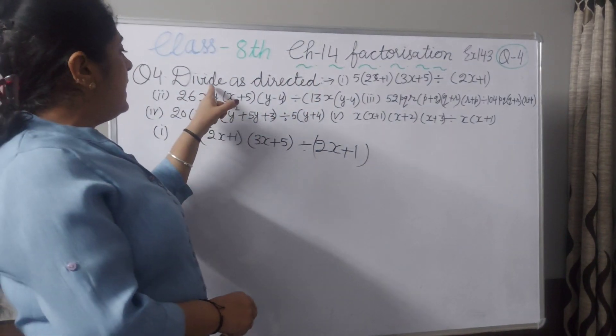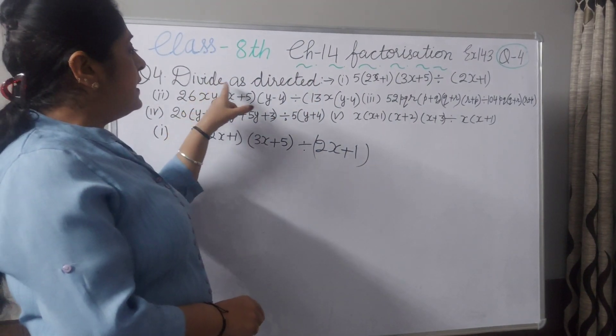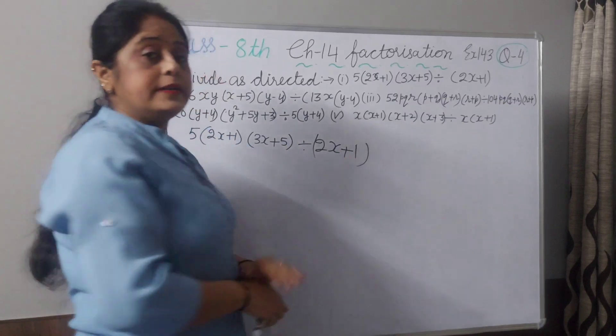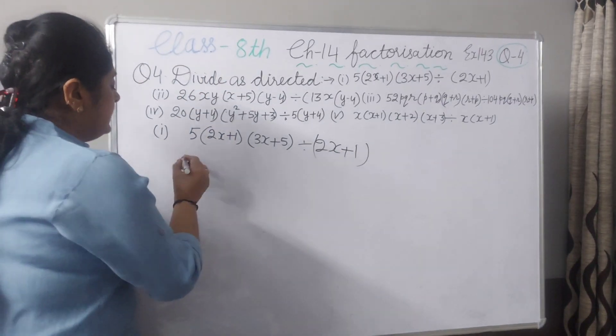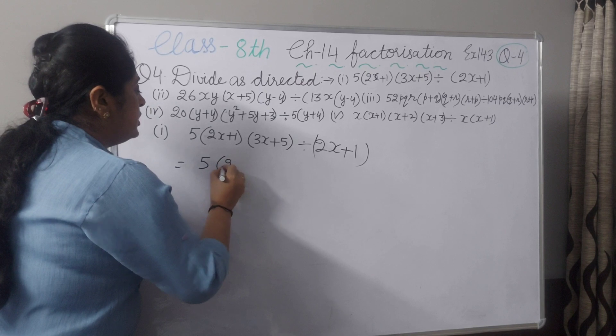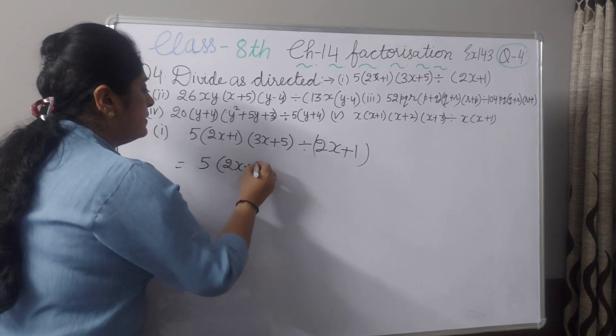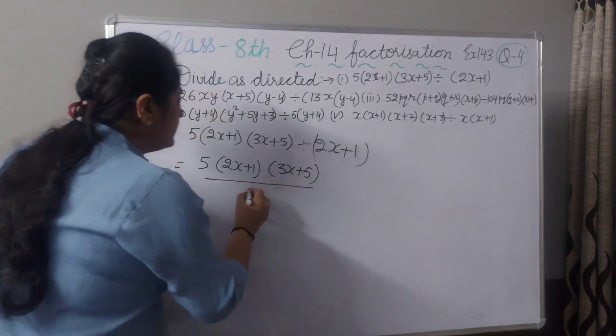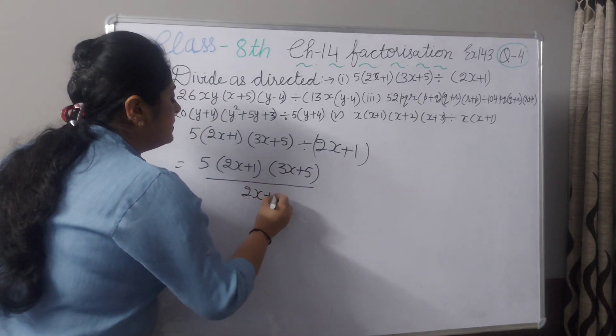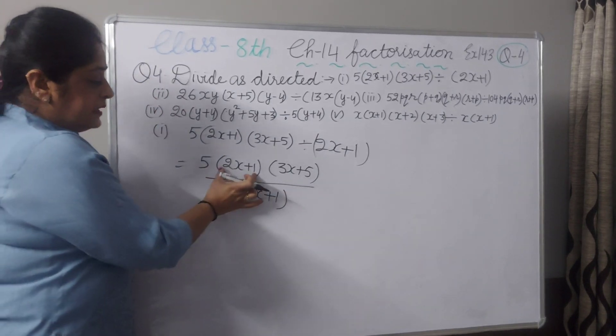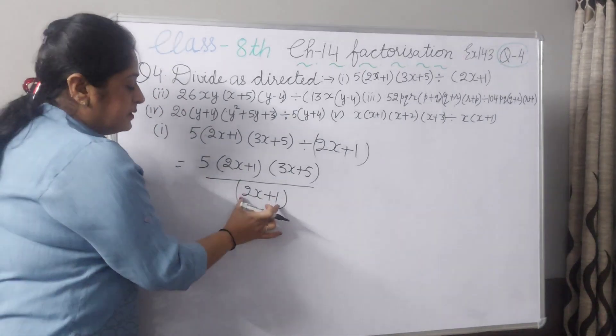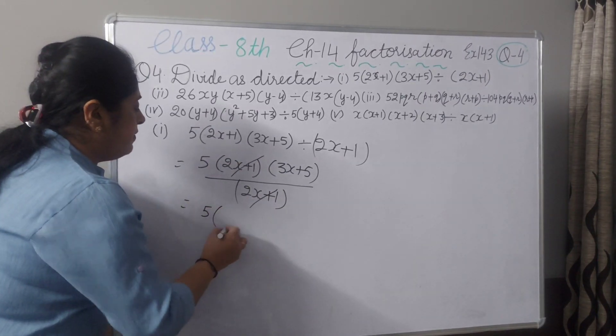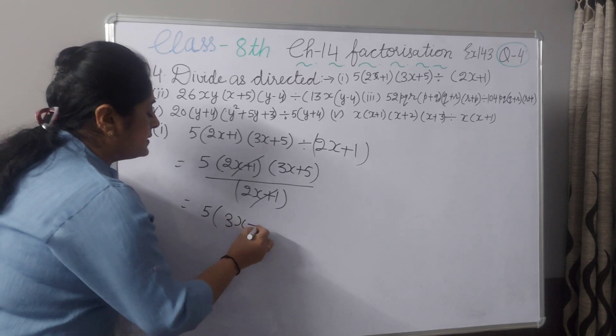There are 5 statements and the heading is divide as directed. First statement I have written here, you have to divide this by 2x plus 1. Write equal sign 5 into 2x plus 1 into 3x plus 5 divided by 2x plus 1. These are binomial terms, two terms, you can cancel. Your answer will be 5 into 3x plus 5.